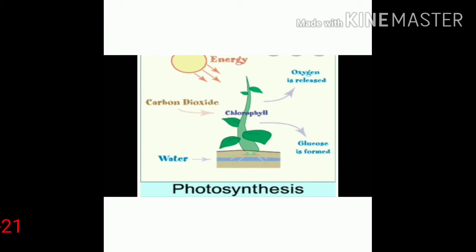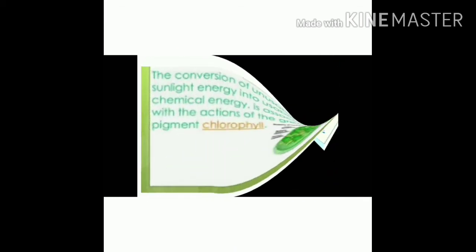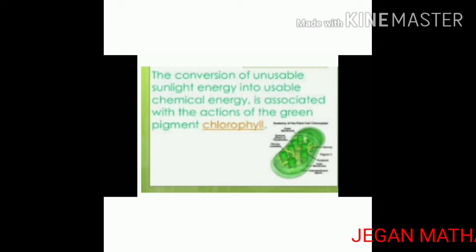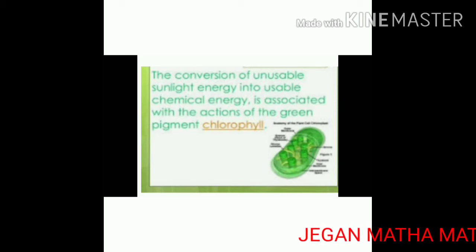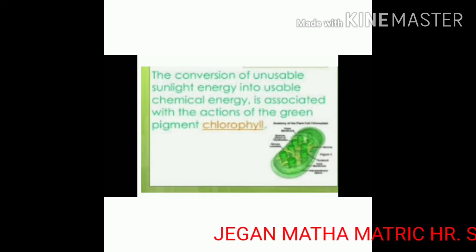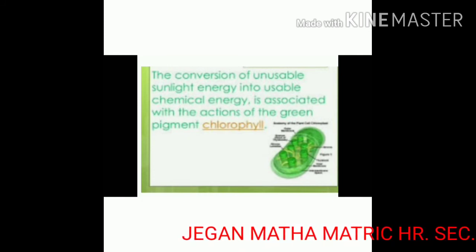The third input is sunlight. A green pigment in the leaves helps them to trap sunlight. This pigment is called chlorophyll. Most leaves are green in color because of this green pigment. The conversion of unusable sunlight energy into usable chemical energy is associated with the actions of chlorophyll.